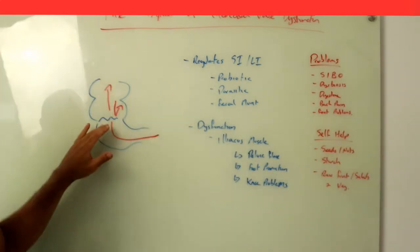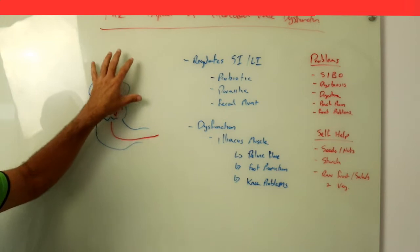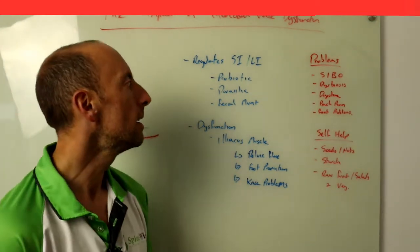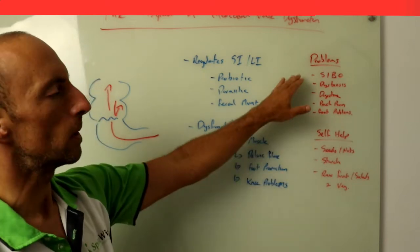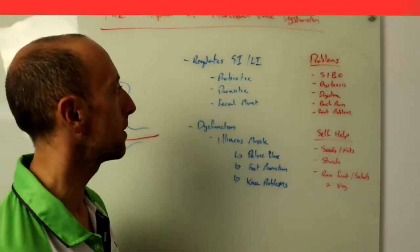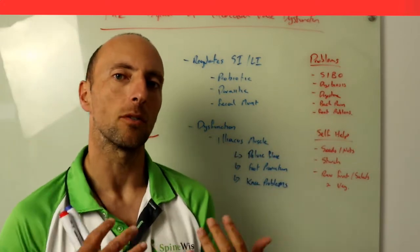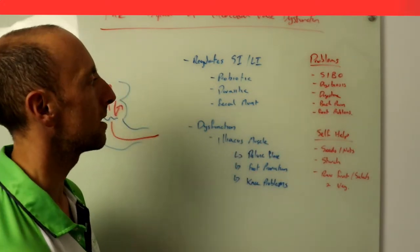So if we're having problems with the ileocecal valve our large intestine bacteria move into our small intestine bacteria as well, it's one of the things it's believed to be contributing to what SIBO actually is. So really important for that dysbiosis, in other words we're getting an imbalance of good healthy bacteria within the digestive system.